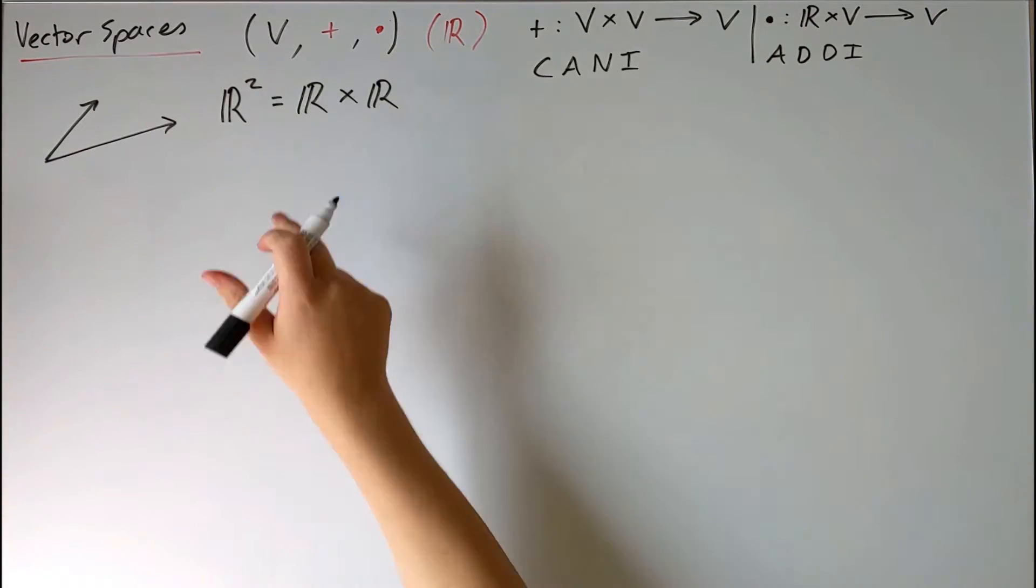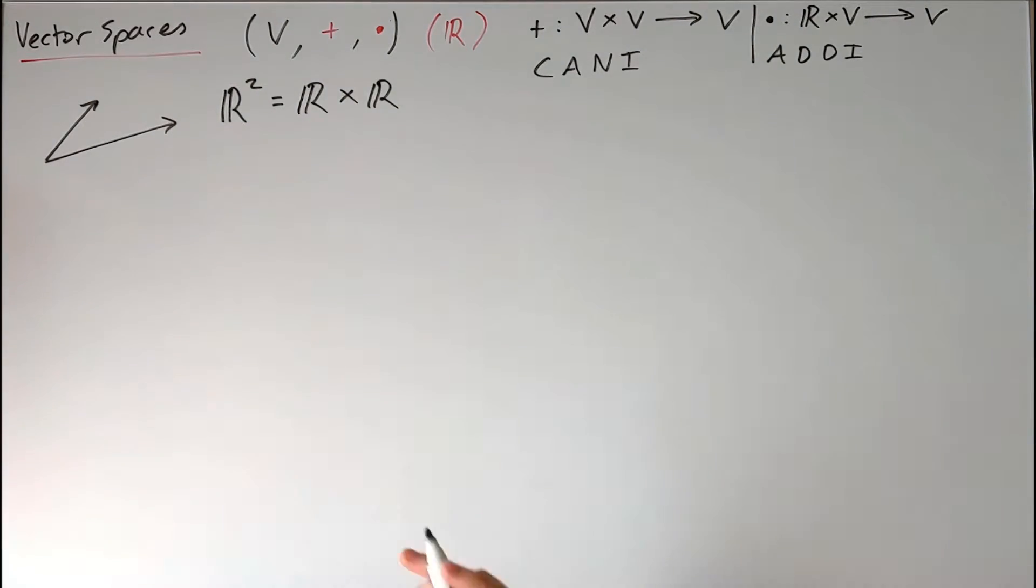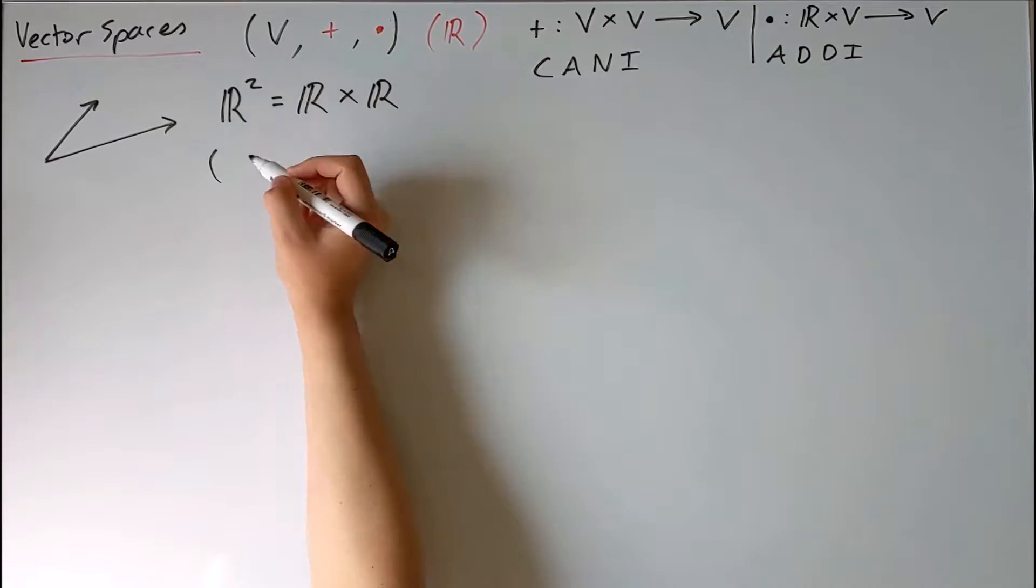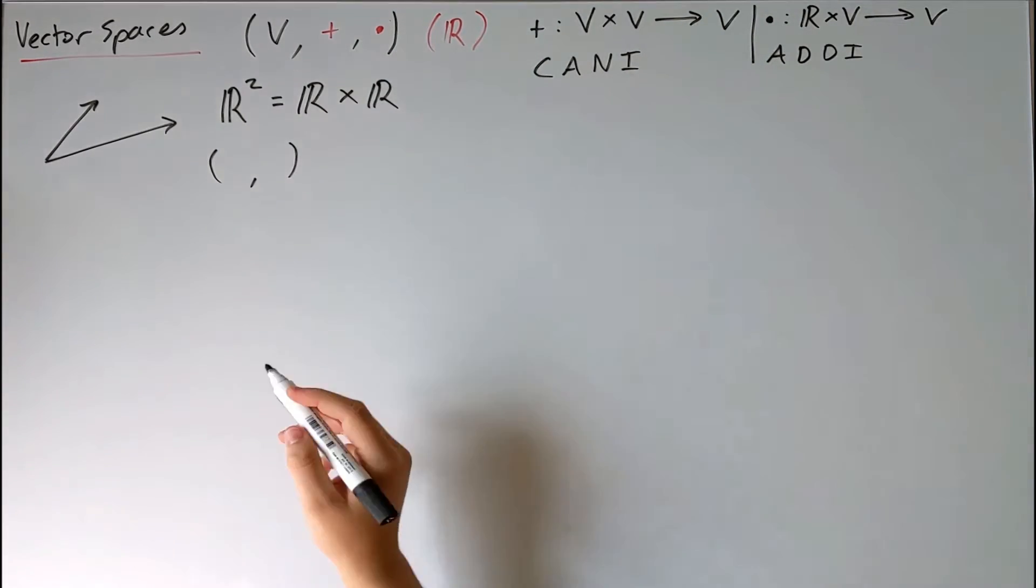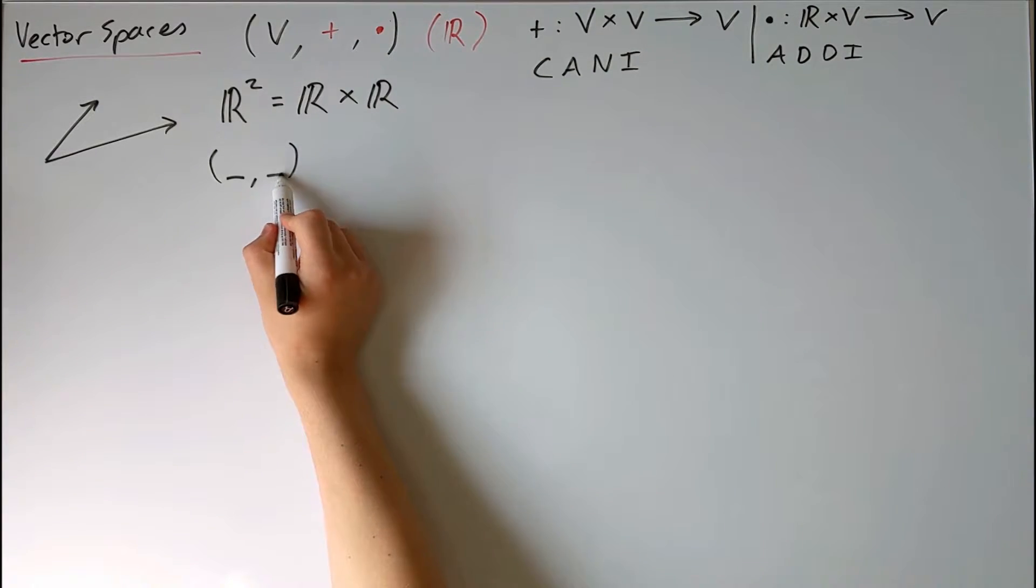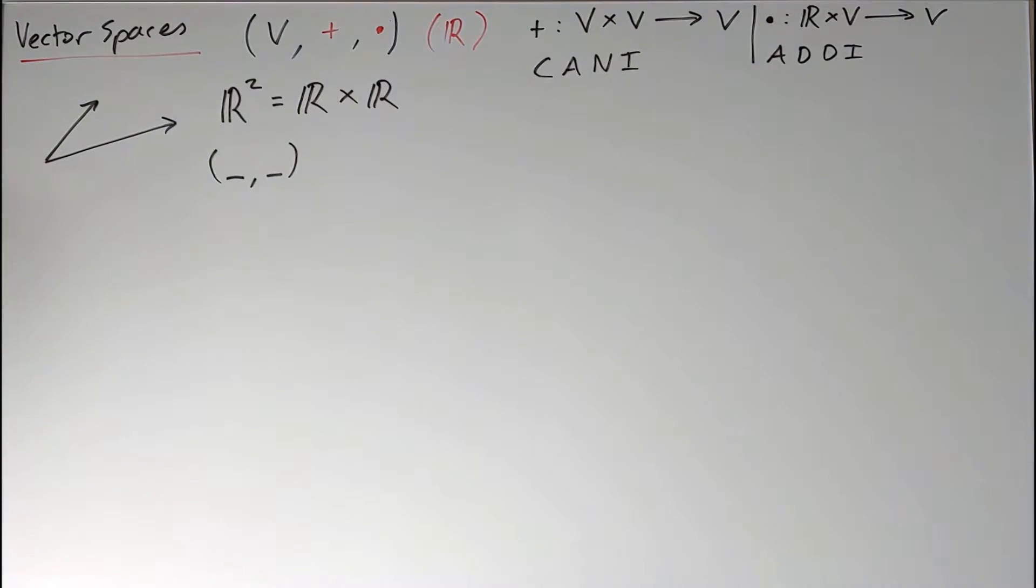Now if you remember what this Cartesian product means, it means that elements of this ℝ² set are these pairs with one element taken from the first set and the second element taken from the second set.